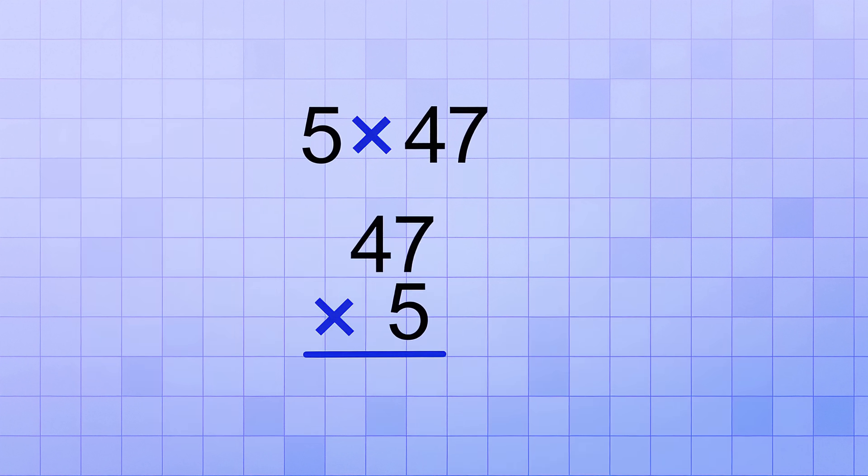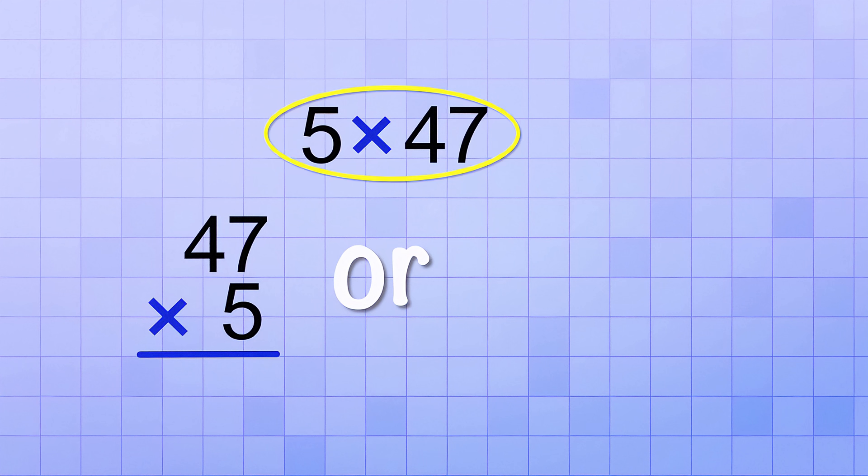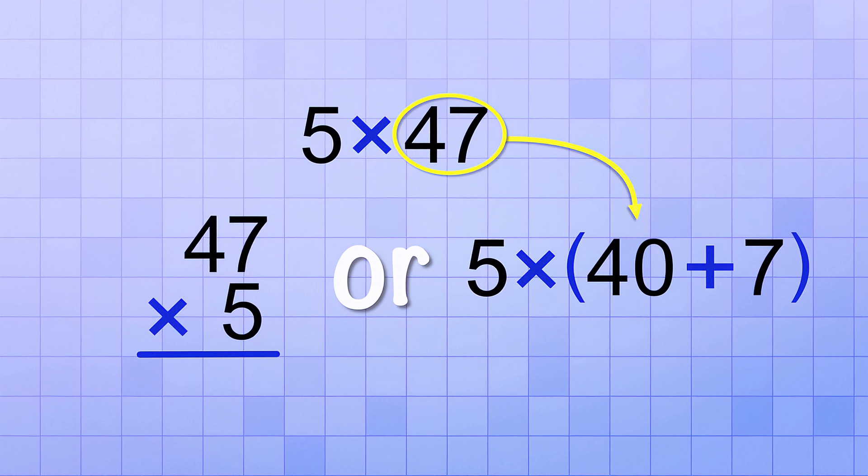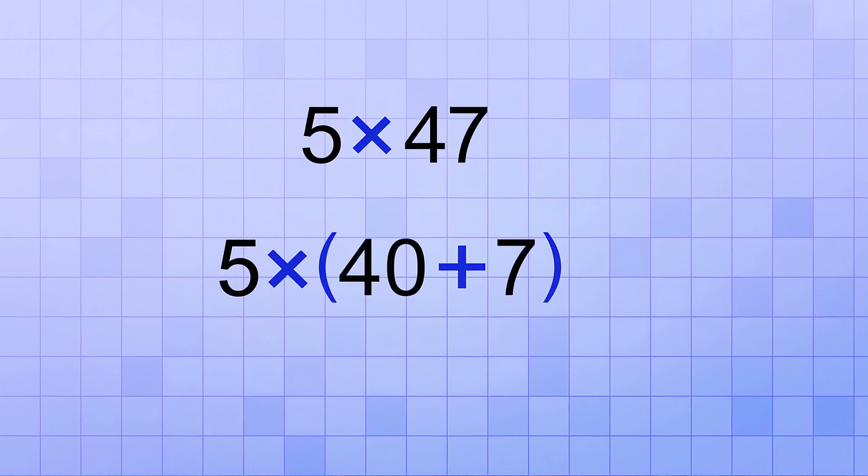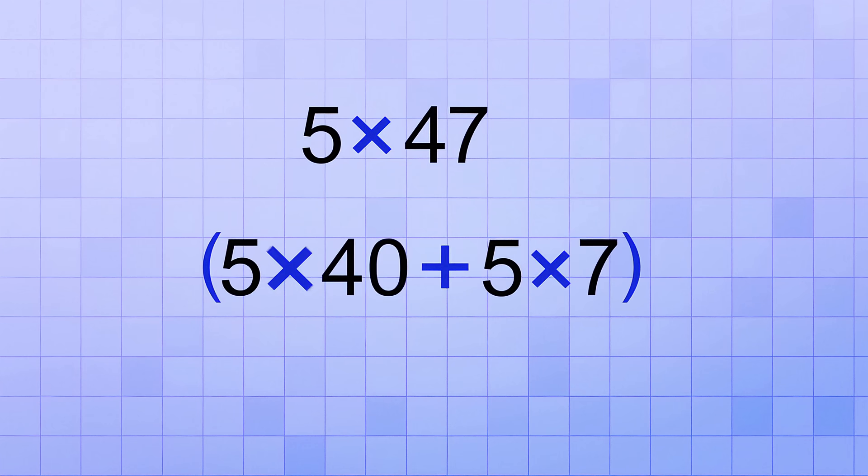Let's say you need to multiply 5 times 47. Well, you could just use the multi-digit multiplication procedure, or you could change this into a problem where the Distributive Property will make it a little easier to do. The key is to realize that you can replace the 47 with 40 plus 7. Then the problem becomes 5 times the group 40 plus 7. And the Distributive Property lets us change that into 5 times 40 plus 5 times 7.